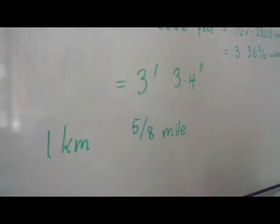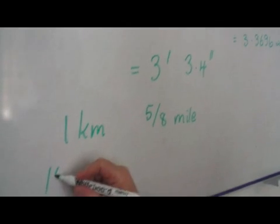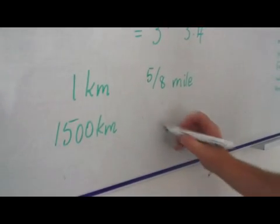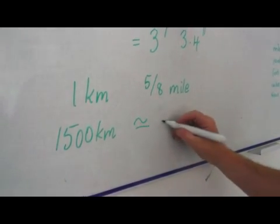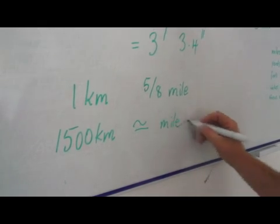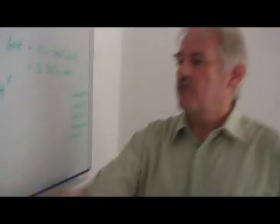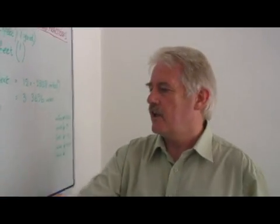But we know that 1,500 kilometers is approximately equal to a mile. It isn't exact by any means, but it's the nearest approximation. So this is a useful thing to remember.